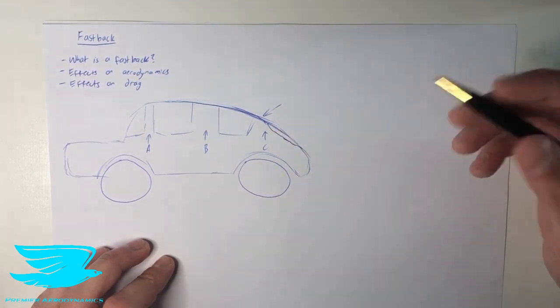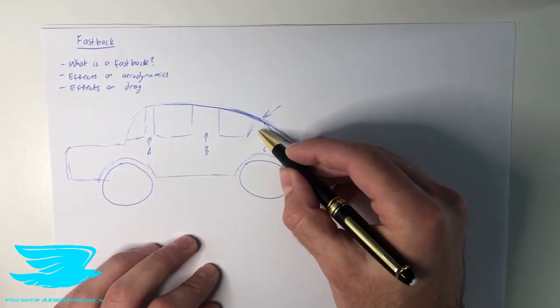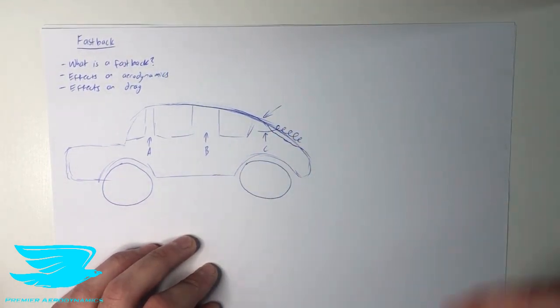This C pillar is very important because the flow comes from around here, and it separates, and it makes a vortex on one side. And on the other side, there is another vortex.